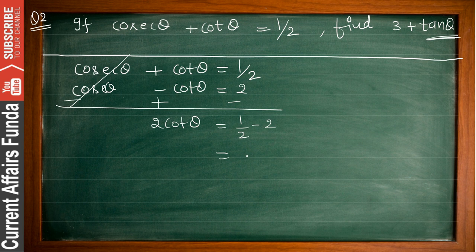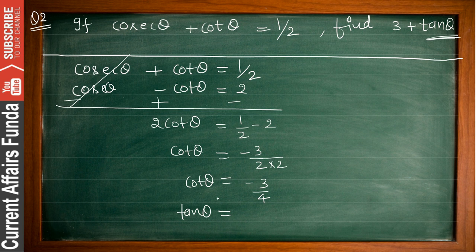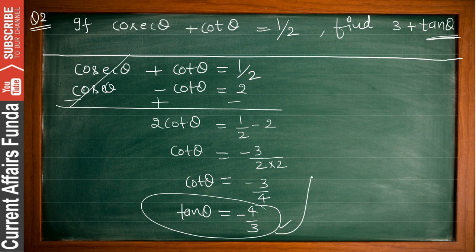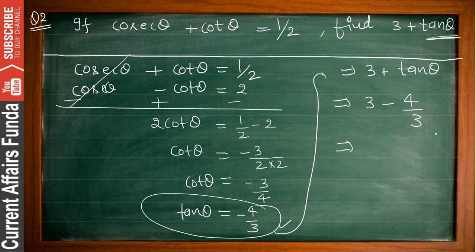After subtracting, you get −3/2, so 2 cot θ = −3/2, giving cot θ = −3/4. Since tan θ is the reciprocal of cot θ, tan θ = −4/3. Put this value into the expression: 3 + tan θ = 3 + (−4/3) = 9/3 − 4/3 = 5/3. So 5/3 is your answer.